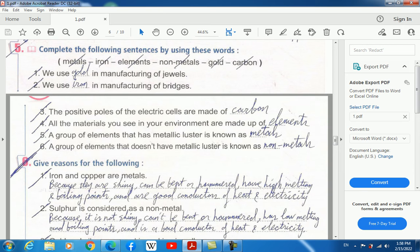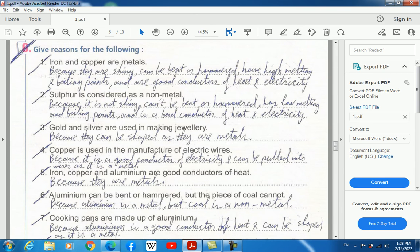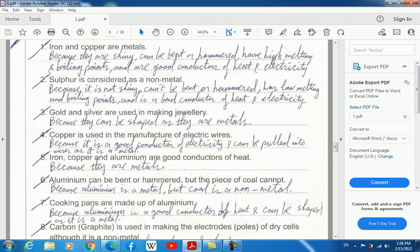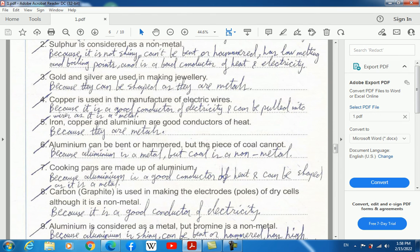Six, a group of elements that doesn't have metallic luster is known as non-metals. Give reasons for the following: One, iron and copper are metals because they are shiny, can be bent or hammered, have high melting and boiling points, and are good conductors of heat and electricity. Two, sulfur is considered a non-metal because it's not shiny, can't be bent or hammered, has low melting and boiling points, and is a bad conductor of heat and electricity.